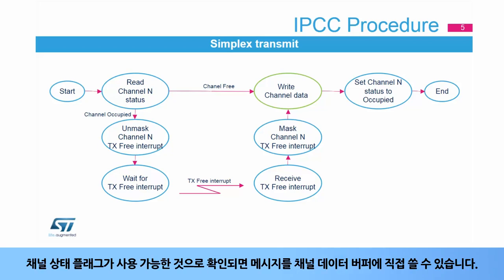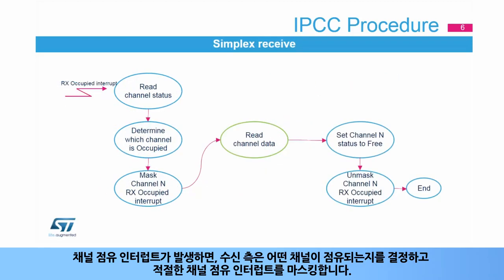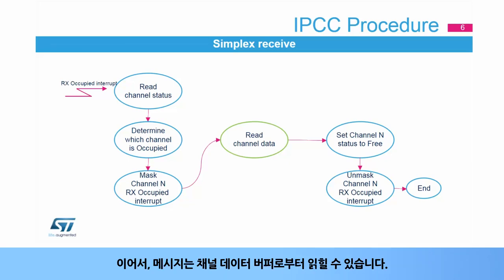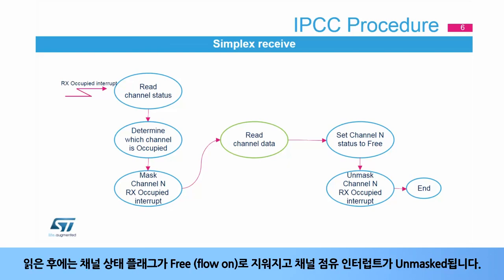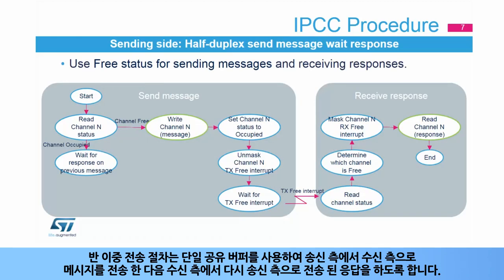When the channel status flag is checked to be free, a message can be directly written in the channel data buffer. When a channel-occupied interrupt is generated, the receiving side determines which channel is occupied and masks the appropriate channel-occupied interrupt. Subsequently, the message can be read from the channel data buffer. Once read, the channel status flag is cleared to free, or flow-on, and the channel-occupied interrupt is unmasked.